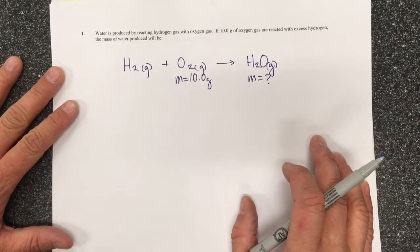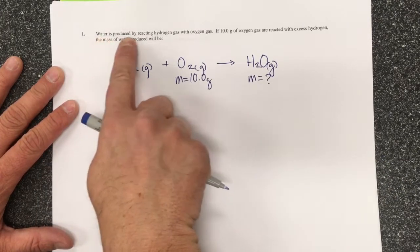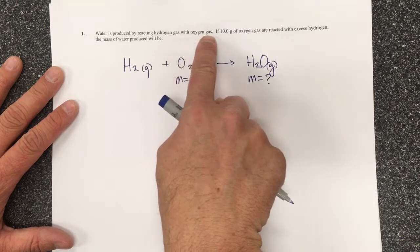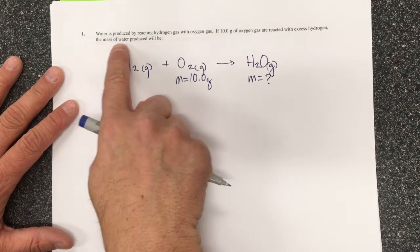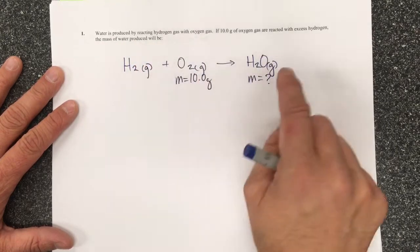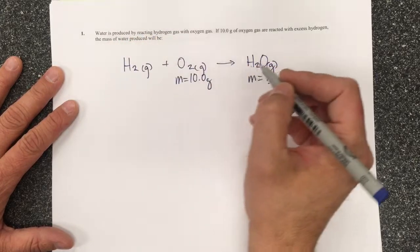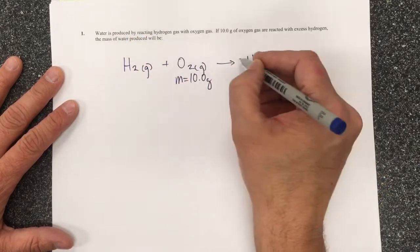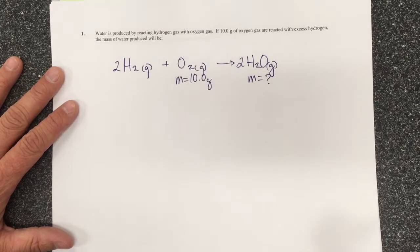This first question says water is produced by reacting hydrogen gas with oxygen gas. If 10 grams of oxygen gas are reacted with excess hydrogen, the mass of water produced will be what. I've got my reaction. For any stoichiometry question it needs to be a balanced reaction, so I balance my oxygens and then my hydrogens.